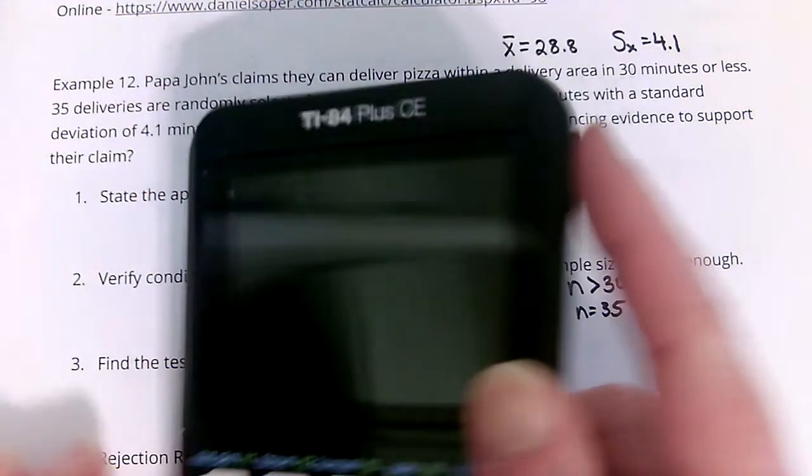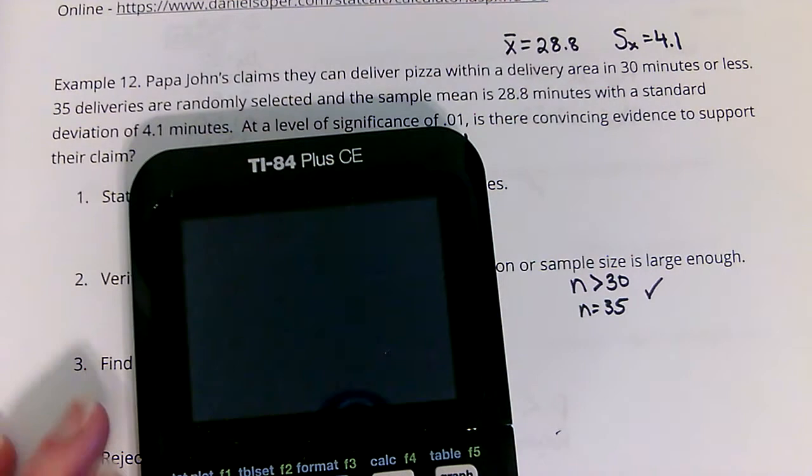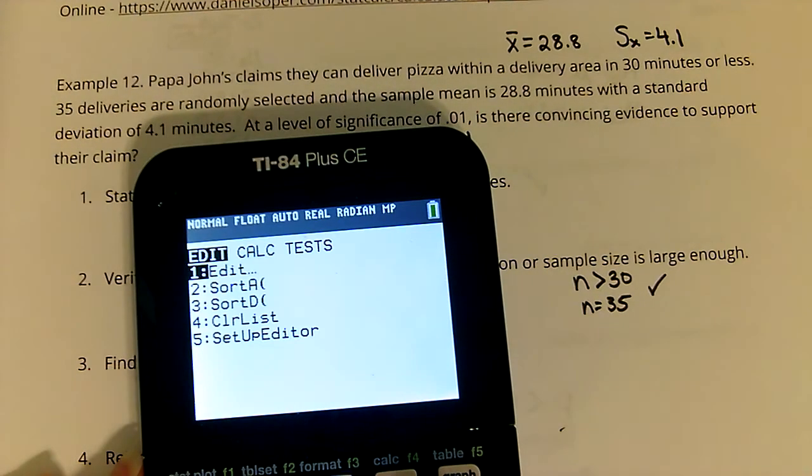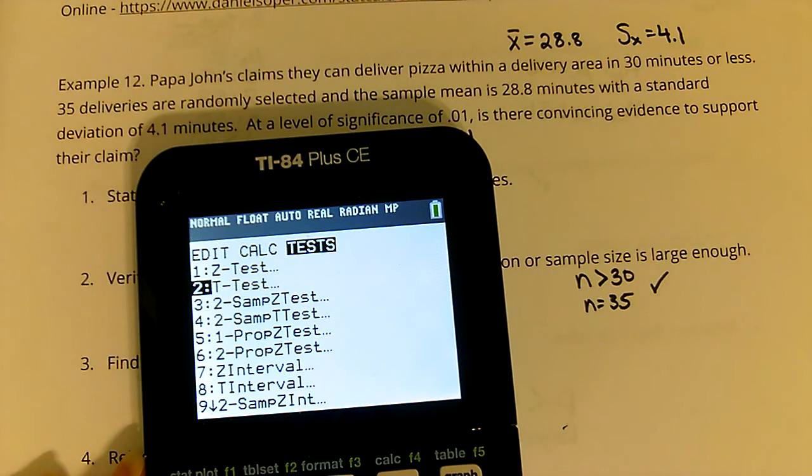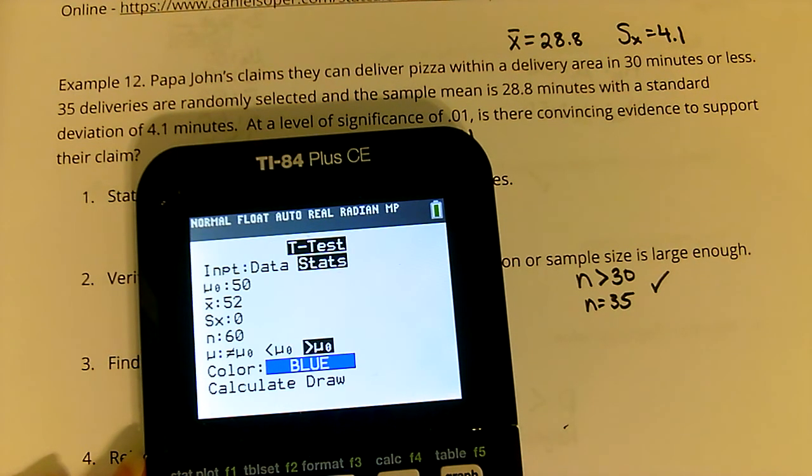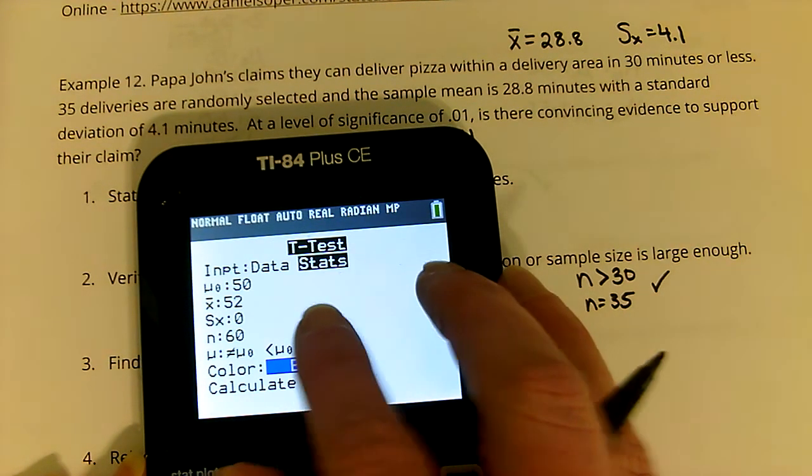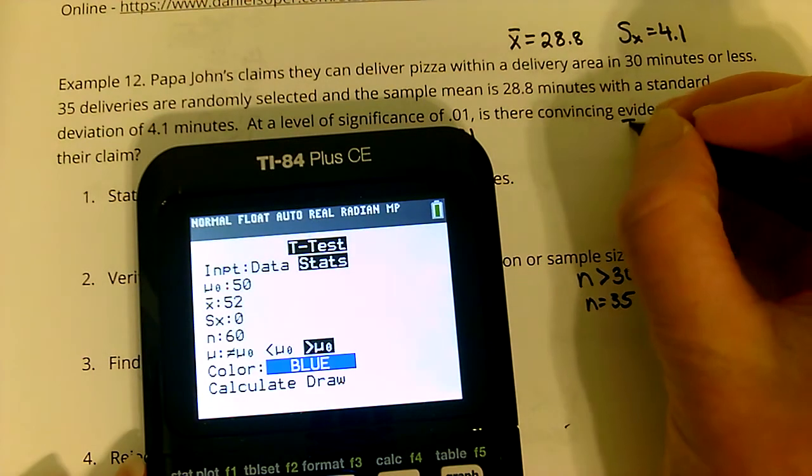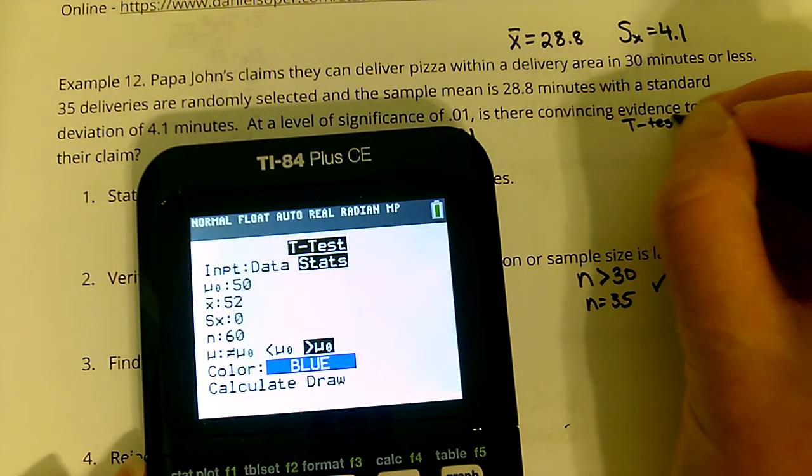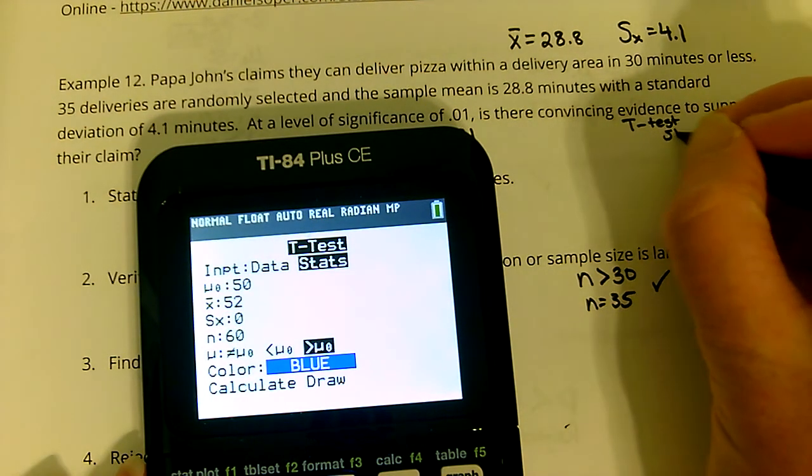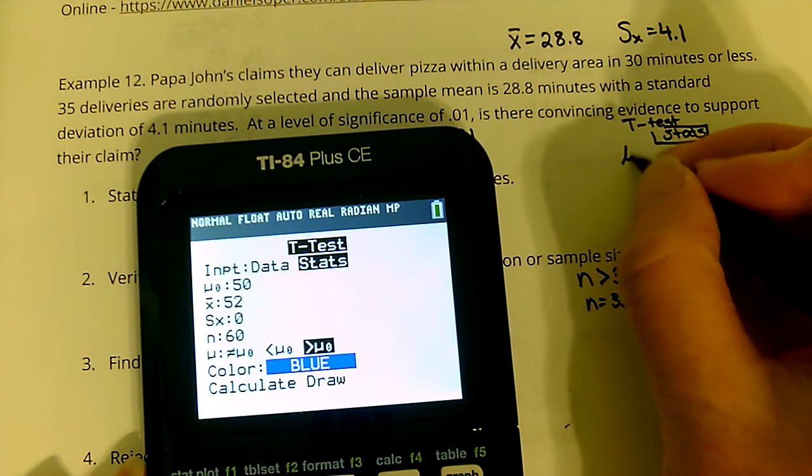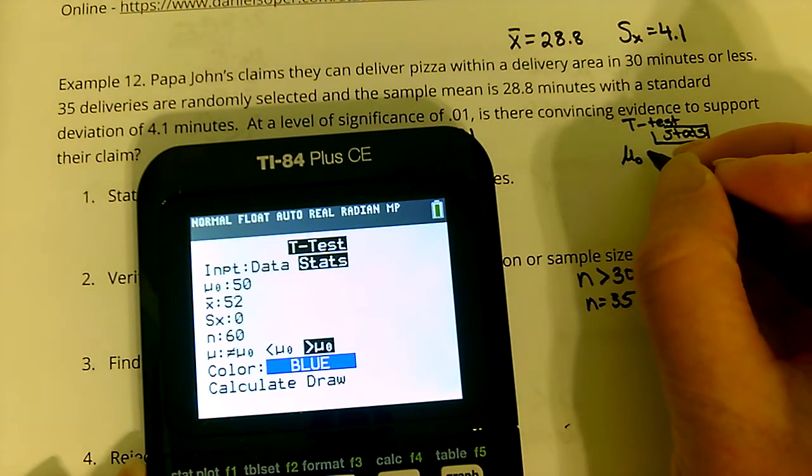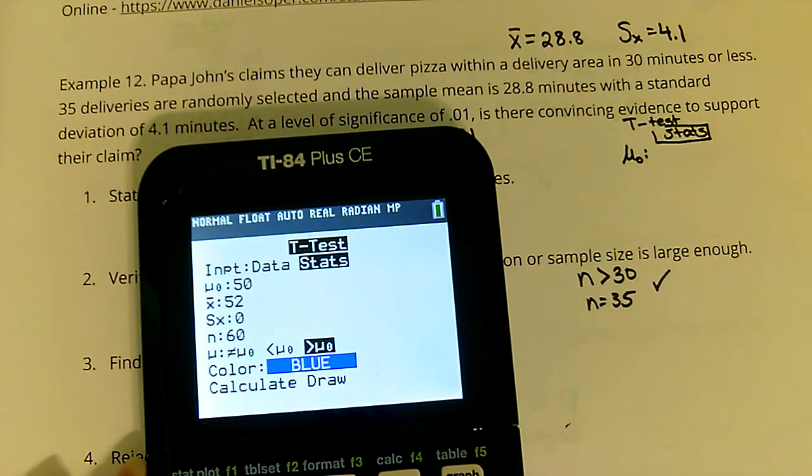So to find the test statistic and the p-value, I'm going to go to Stat, Tests, and I'm just going to choose T-Test instead. I'm going to be inputting stats, so T-Test, Stats, and it asks me what the status quo is, what the null is, and that's 30.